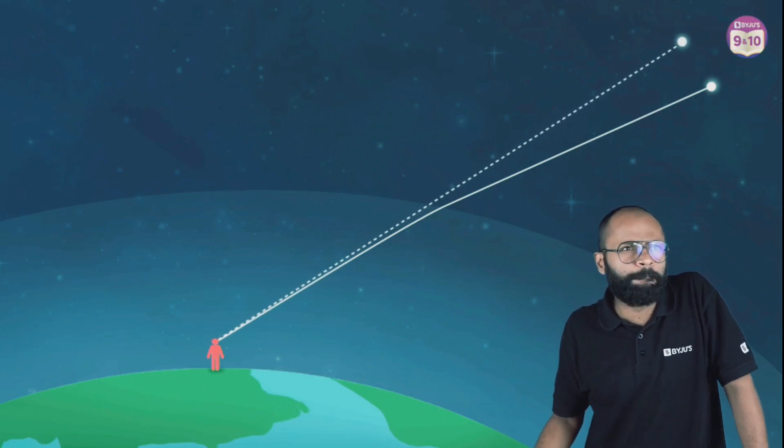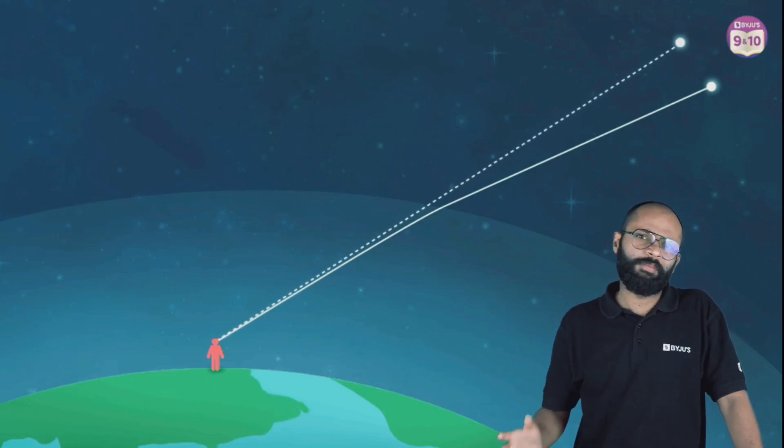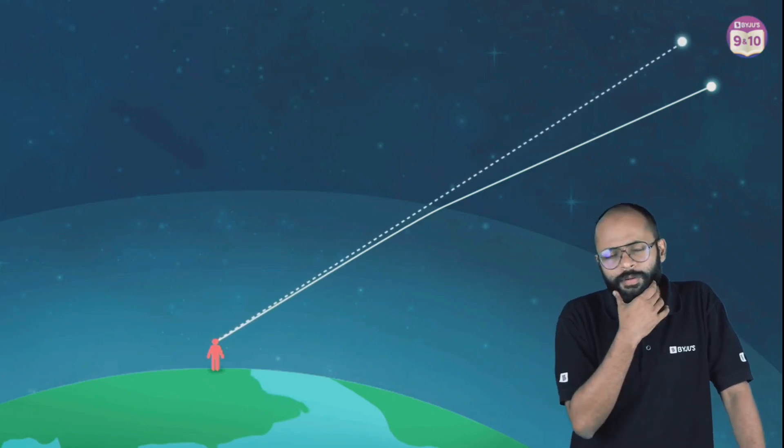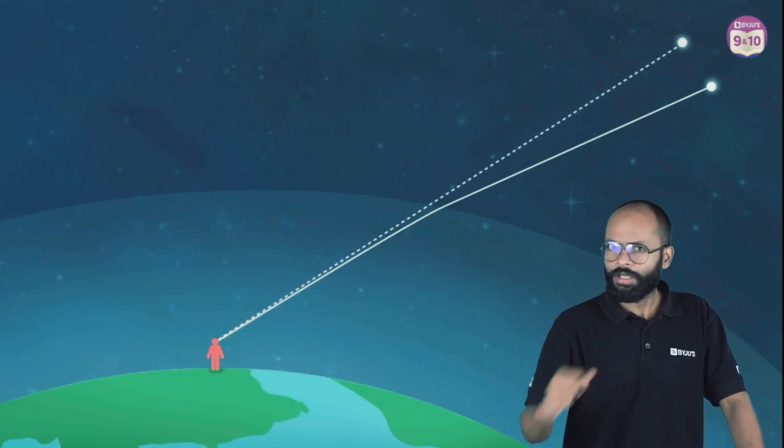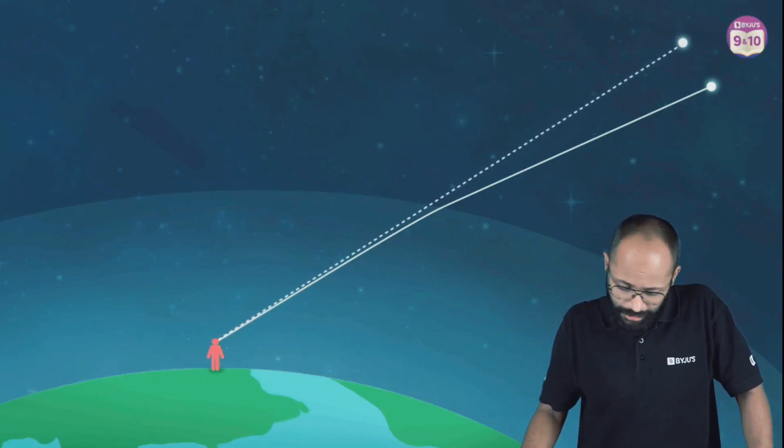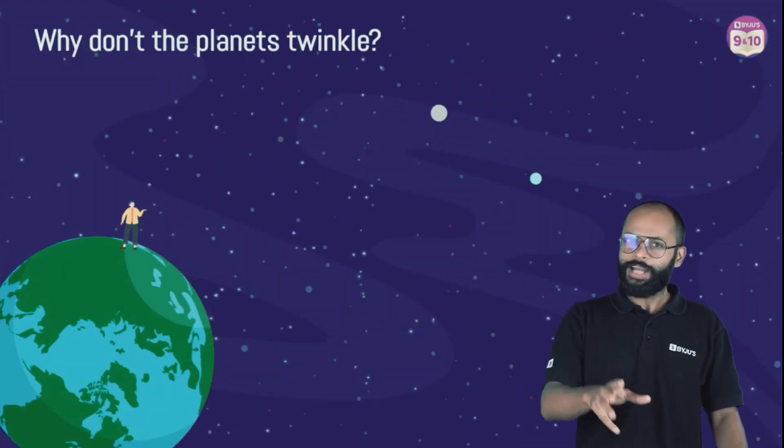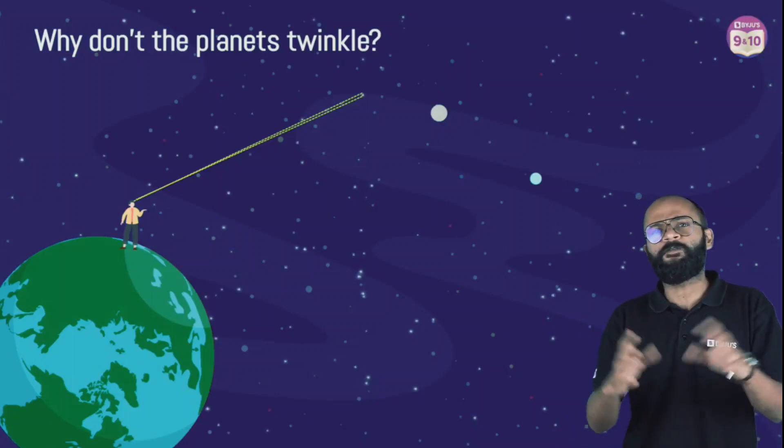Now you can ask me one more very good question: stars are twinkling, okay, it's fine, but why don't planets twinkle? I mean, planets are quite far from us. If you see the morning star, the evening star, the Venus, Venus doesn't twinkle. Why do only stars twinkle? Nice, if you had this question I'm very happy.